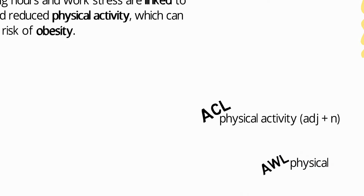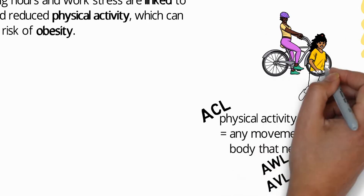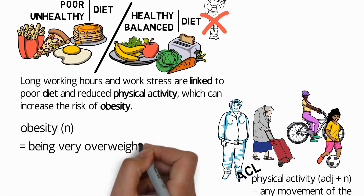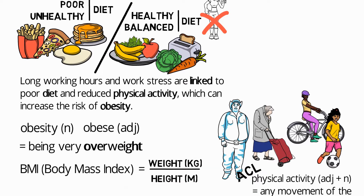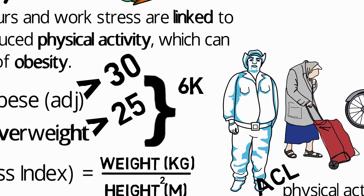Physical activity means any movement of the body that needs energy — for example, cycling, football, or even just walking. Next, 'obesity' is a noun meaning being very overweight. The adjective is 'obese.' The difference between obese and overweight relates to BMI (body mass index): overweight means a BMI over 25, whereas obese means over 30. Though obesity and overweight are very common health words, they're in the 6k word frequency list — definitely useful for writing and common in reading texts about health.